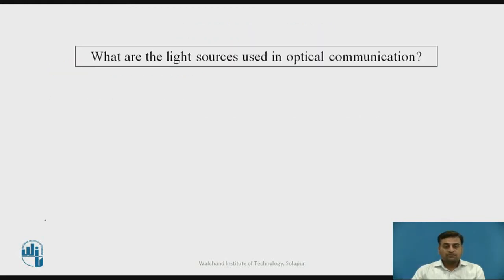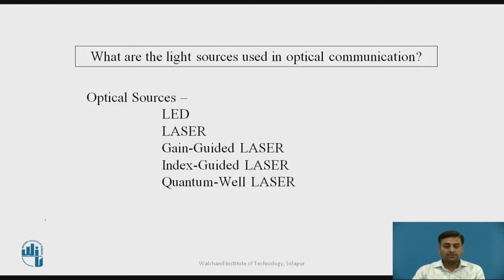You may pause the video here and try to find the answer to this question: what are the light sources used in optical communication systems? The light sources used in optical communication systems are LED and laser. There are multiple types of laser: injection laser, gain-guided laser, index-guided laser, and quantum well lasers. We have seen all these optical sources in the previous lectures, so we will move ahead to optical detectors.